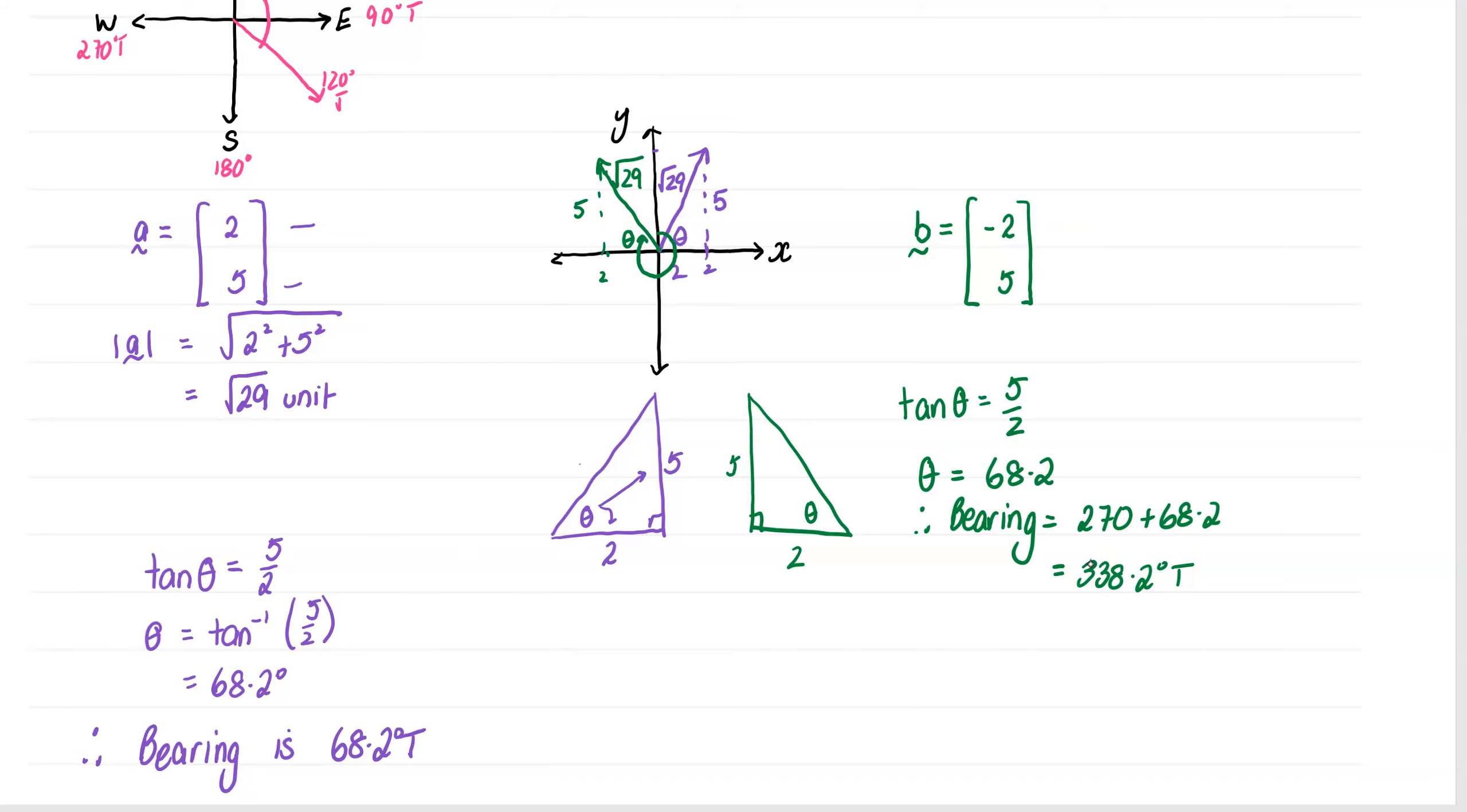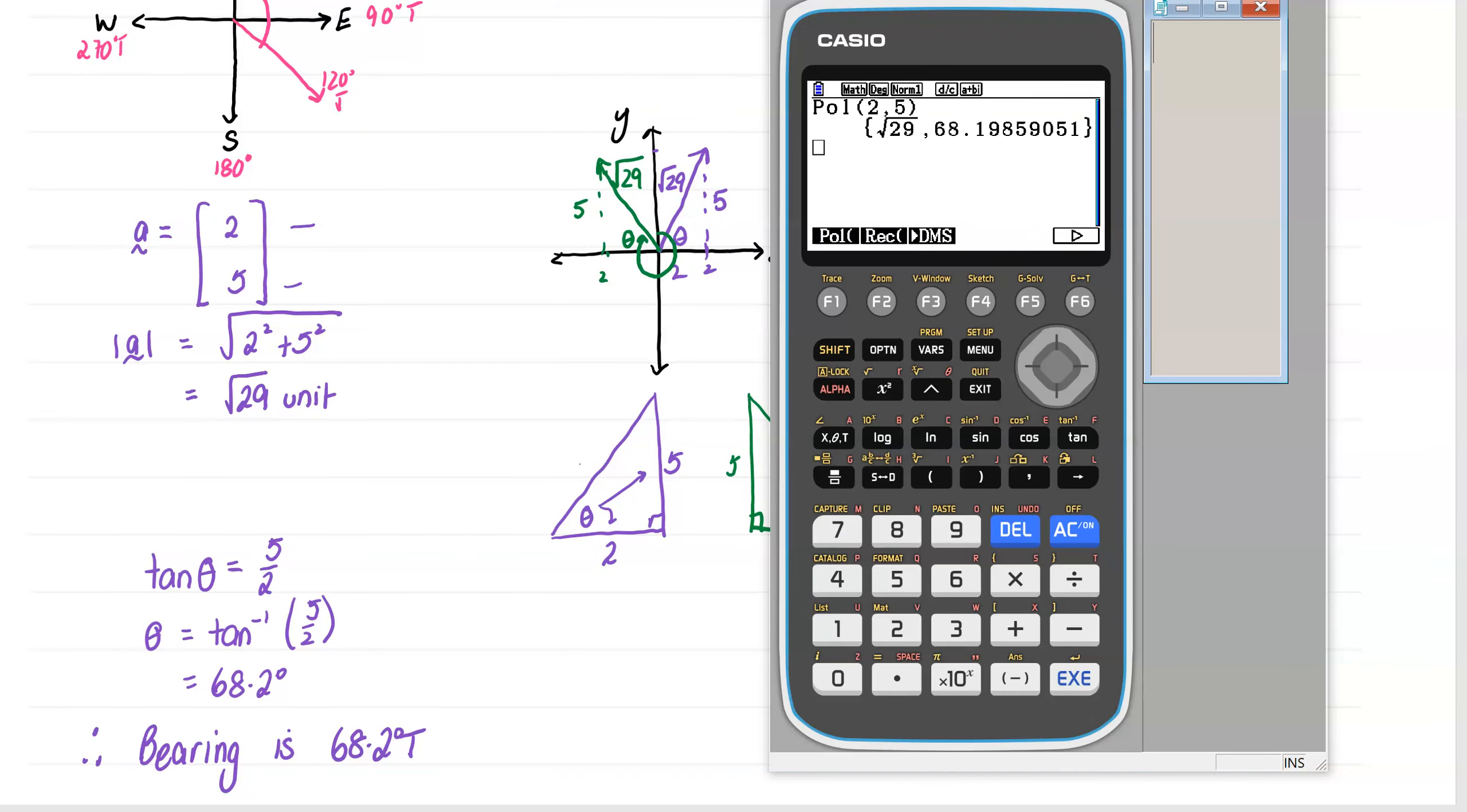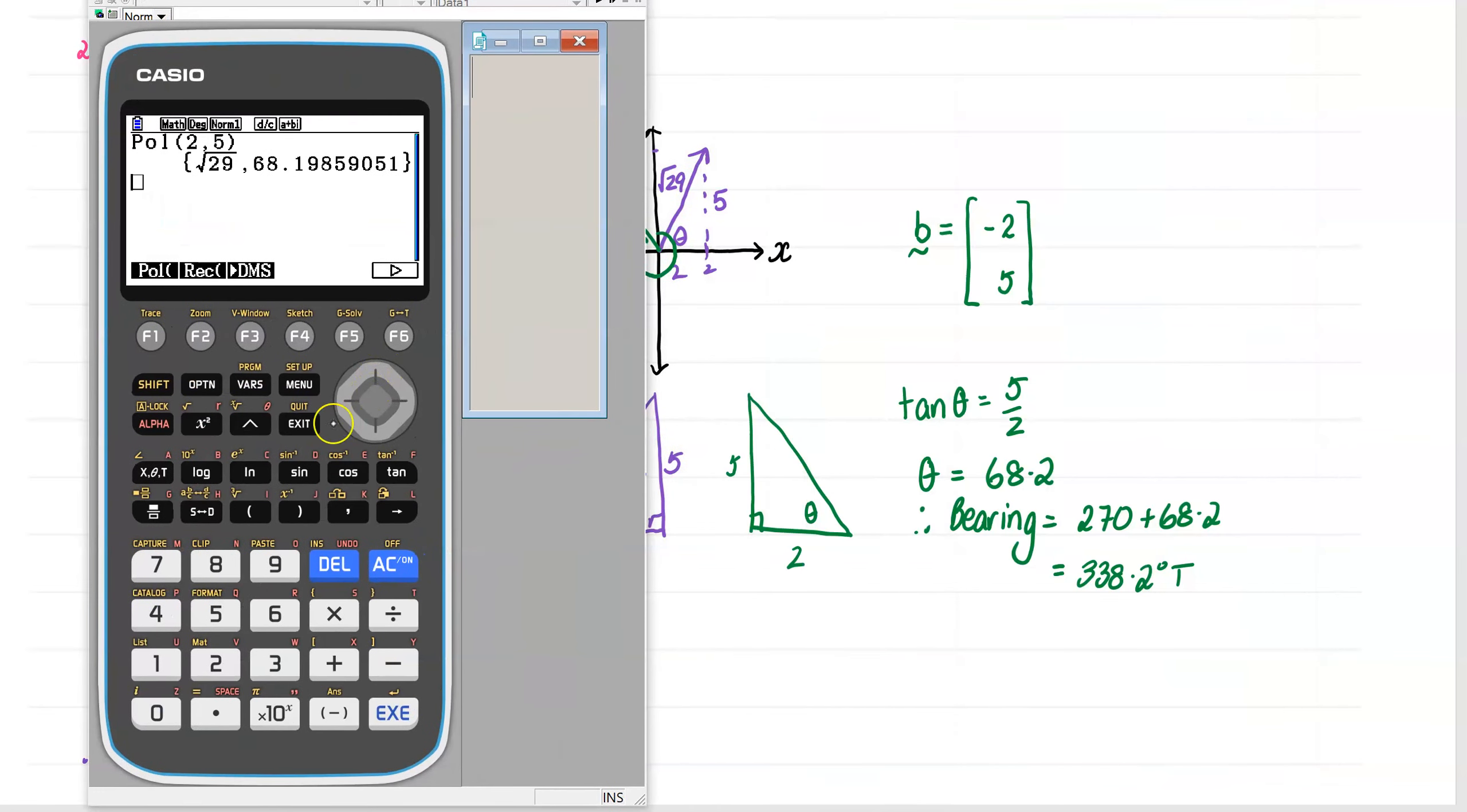So it all seems pretty standard. Let's see how the calculator deals with that. So this time we're going to go minus 2 comma 5 bracket. Now when I press equals this time, once again, very happy. We get the root 29, which is our magnitude. But look at our angle that we get, 111. That is not the same as this. And that's because the angle that they're showing on your calculator is what we call our angle here from our axes. They're going to give you our theta. They're going to look at it as going that way.